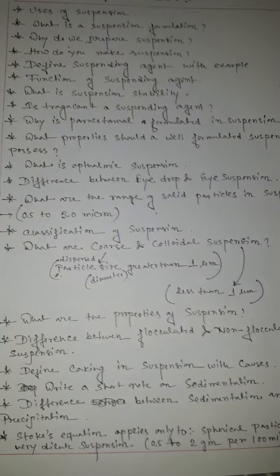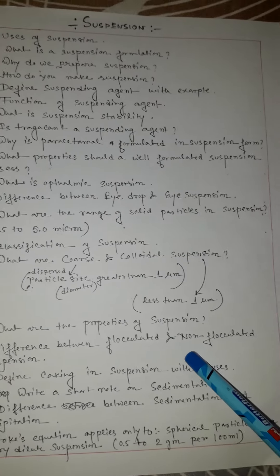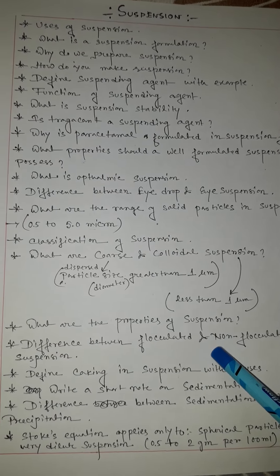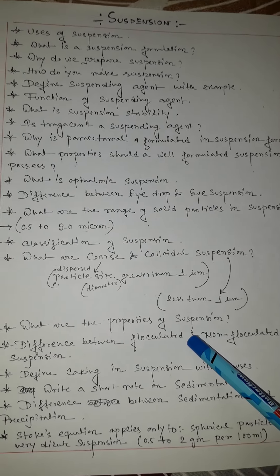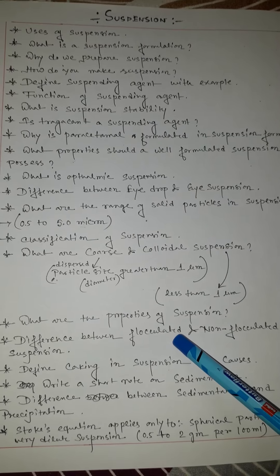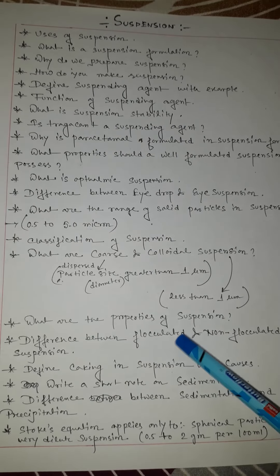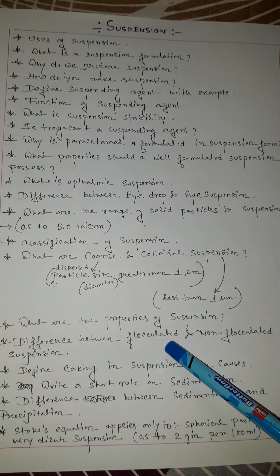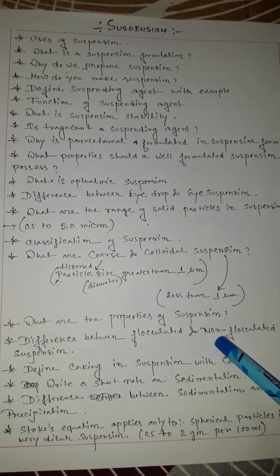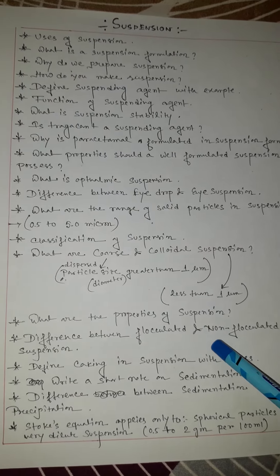What are the properties of suspension? That means characteristics — difference between flocculated and non-flocculated suspension. These are very important. Flocculated means the suspended particles are not dispersed into the suspension medium, but non-flocculated means this type of particles are dispersed into the suspension medium.